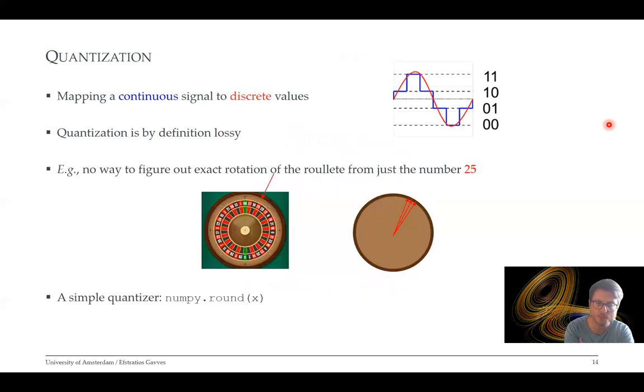Quantization means mapping a continuous signal to discrete values. It's been around for a very long time as a concept. Quantization is, by definition, a lossy procedure. For instance, if we had a roulette, there is no way we can figure out the exact rotation of the roulette by just knowing that the ball is in slot number 25. We know approximately what's the rotation, but we cannot know the exact rotation. We have lost this information because of the quantization. Perhaps the simplest quantizer is just the round function.